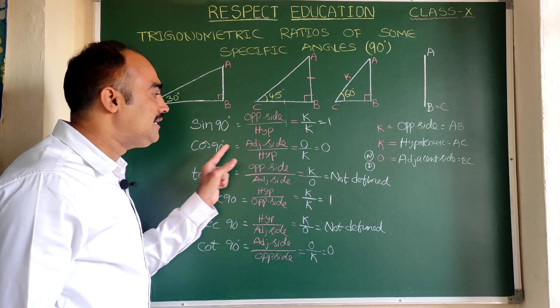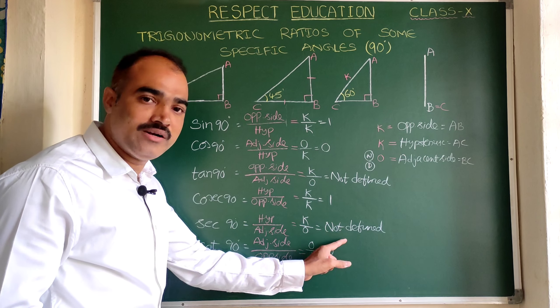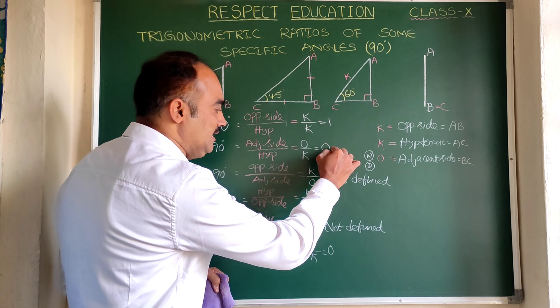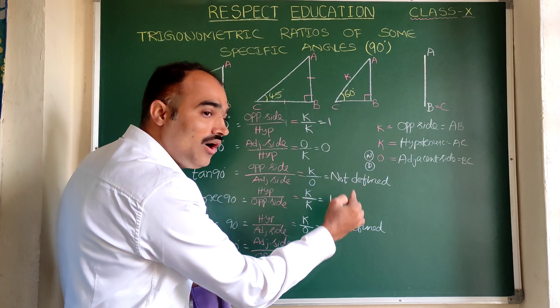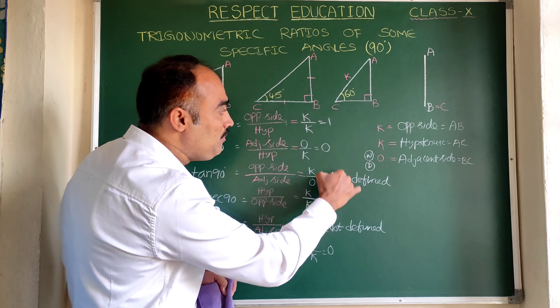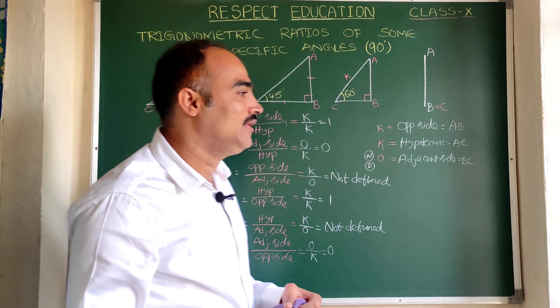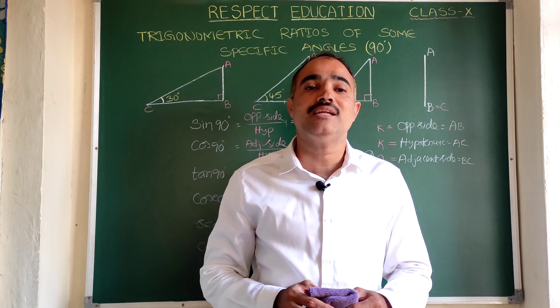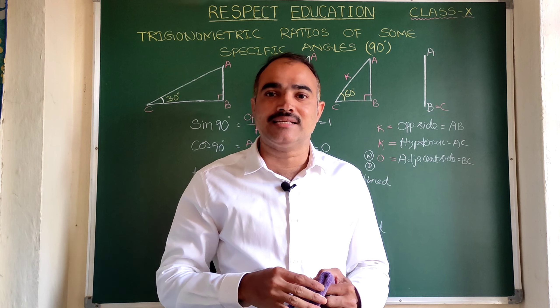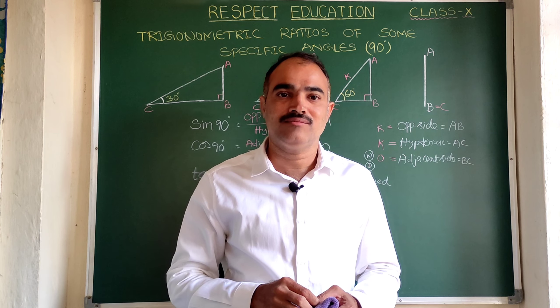So finally, let us say the values: sin 90 is equal to 1, cos 90 is equal to 0, tan 90 is equal to not defined, cosecant 90 is equal to 1, secant 90 is equal to not defined, cot 90 is equal to 0. See here, observe the values: 1, 0, not defined, 1, not defined, 0. Is it clear? Right.